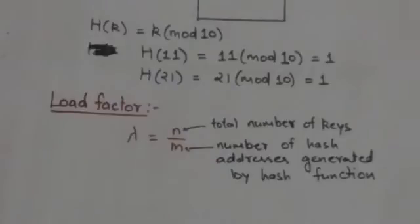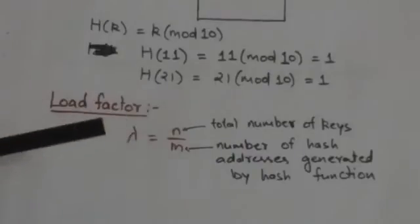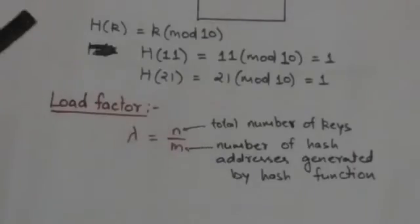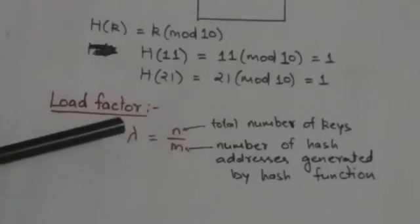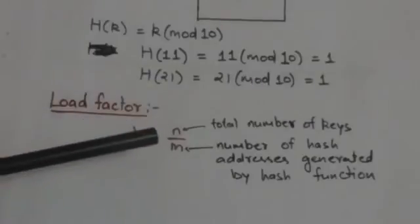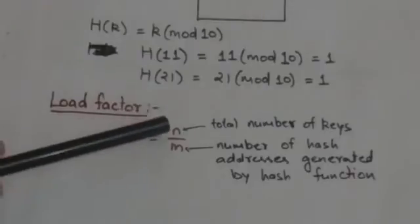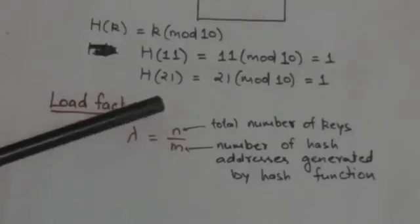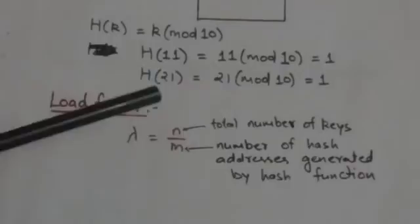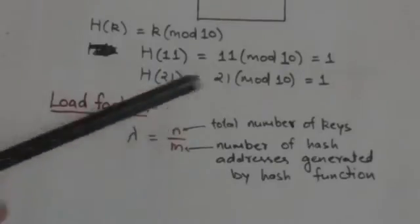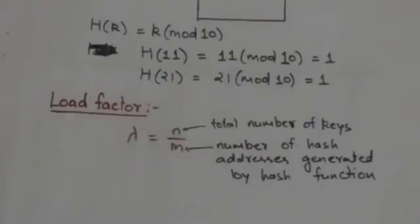There is an important term associated with collision: the load factor. The load factor is the ratio of the total number of keys to the total number of hash addresses generated by a hash function. The load factor is lambda, and lambda equals n divided by m, where n is the total number of keys and m is the number of hash addresses generated by the hash function.